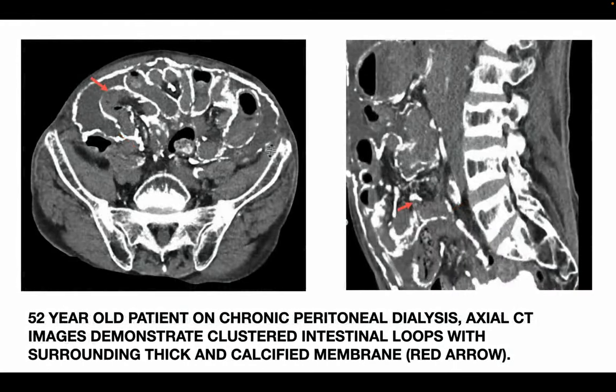This is another case of a 52-year-old patient on chronic peritoneal dialysis. Axial CT images demonstrate clustered intestinal loops with a surrounding thick and calcified membrane, as depicted by the red arrow.